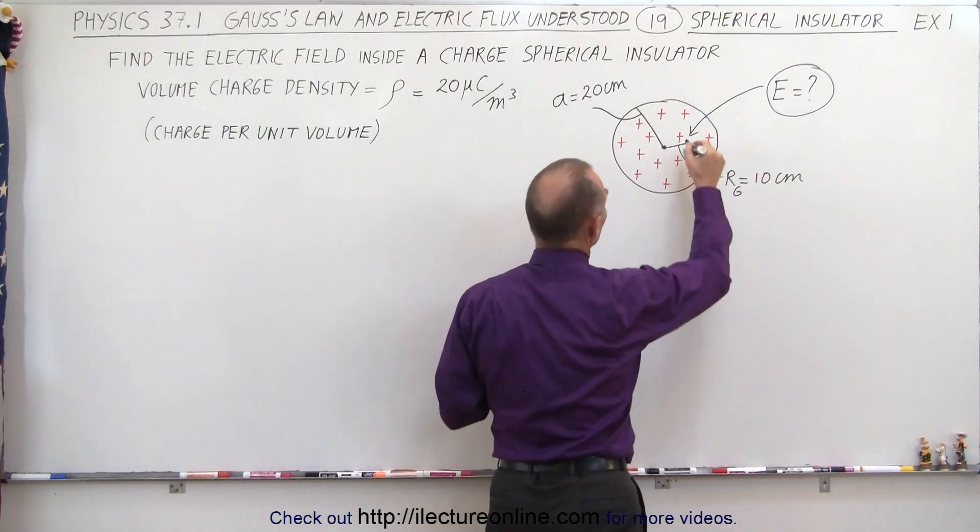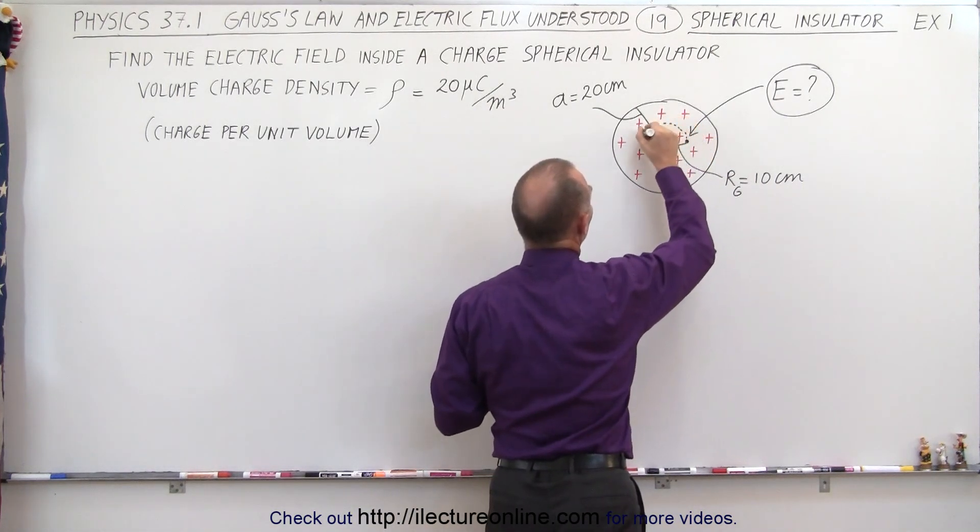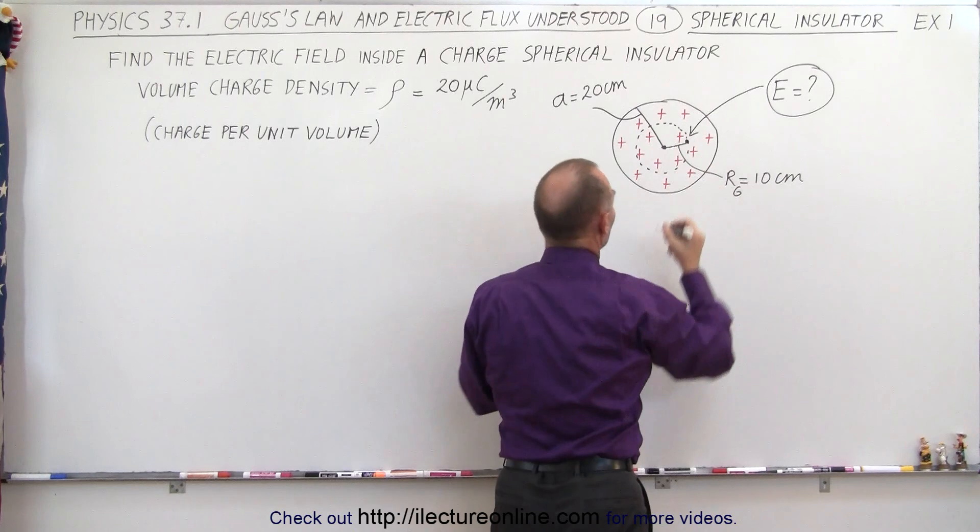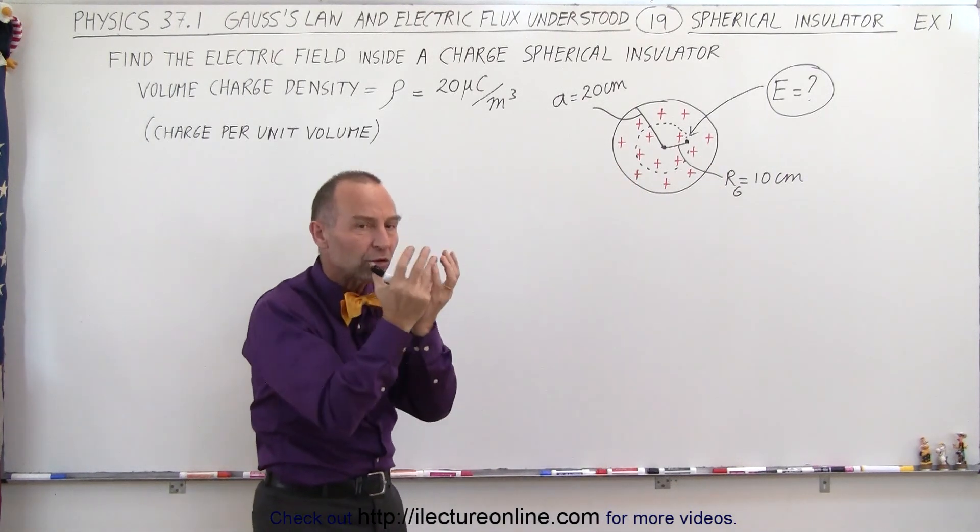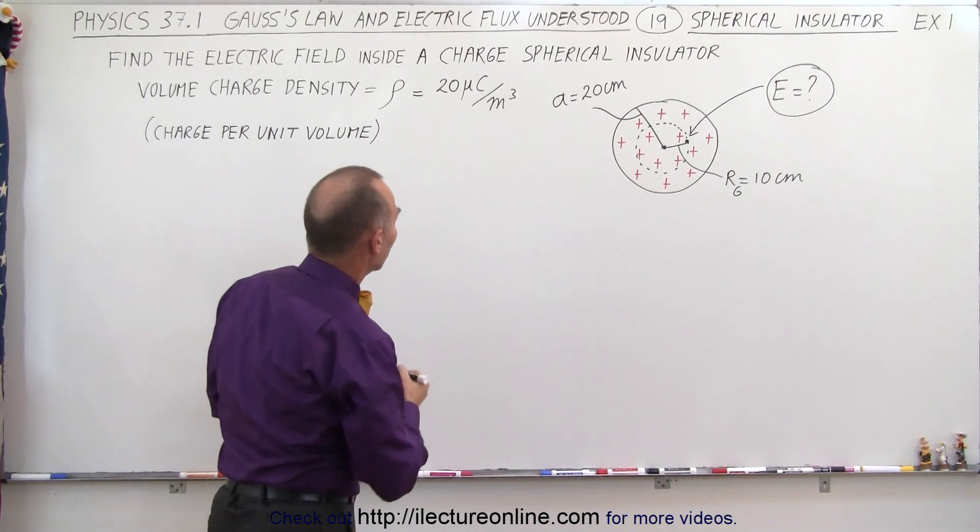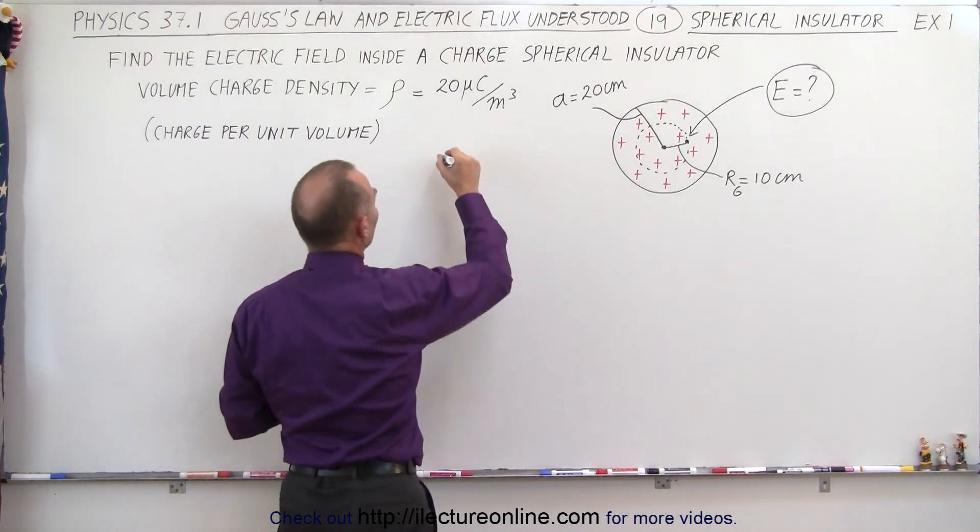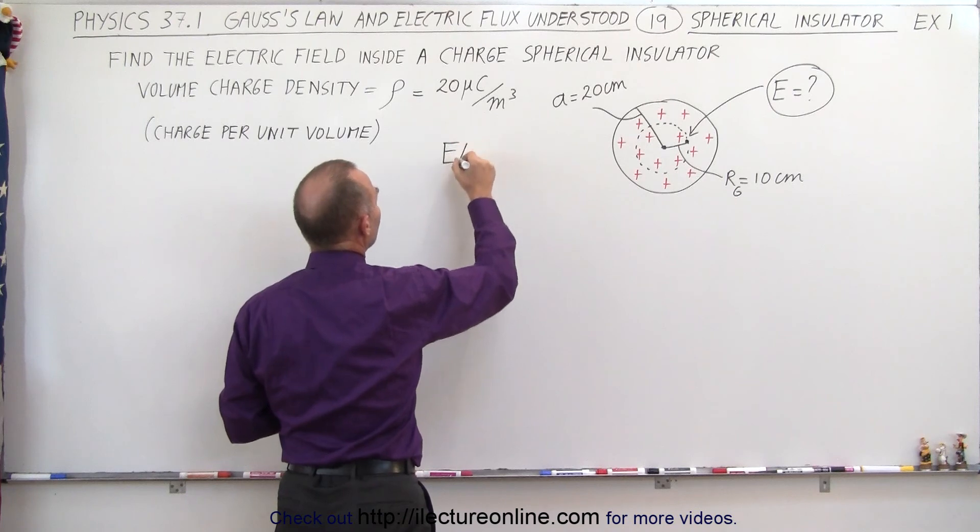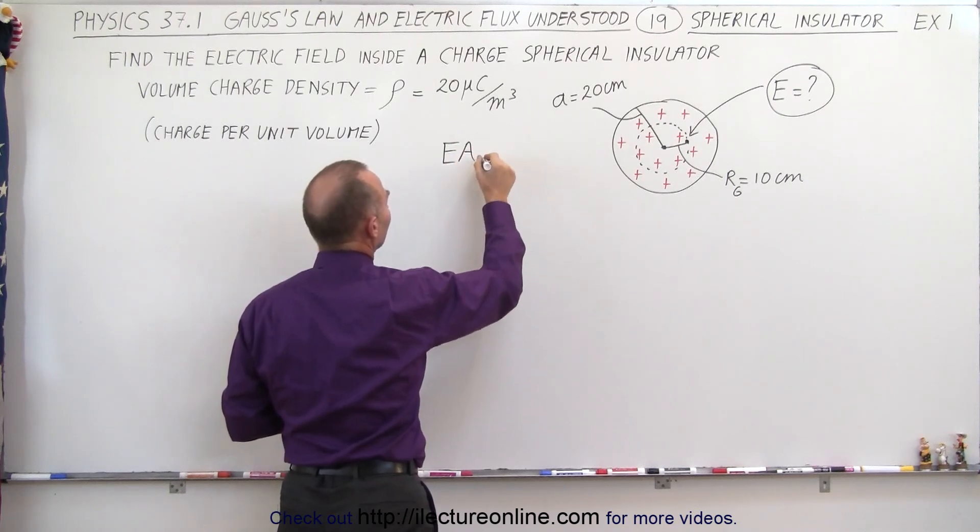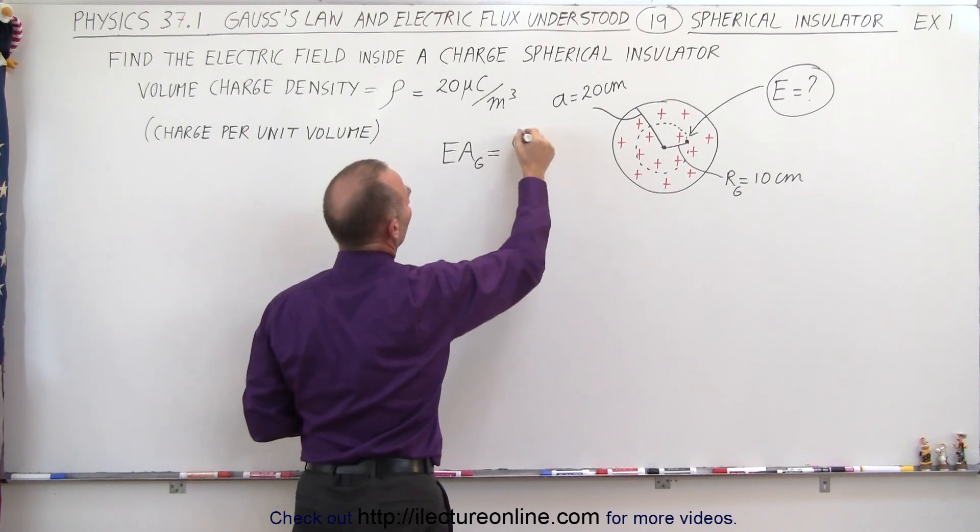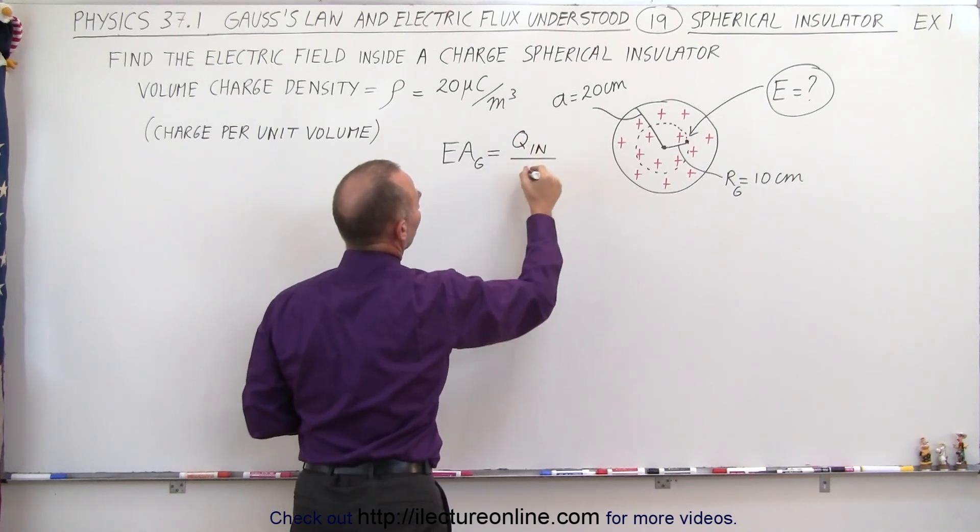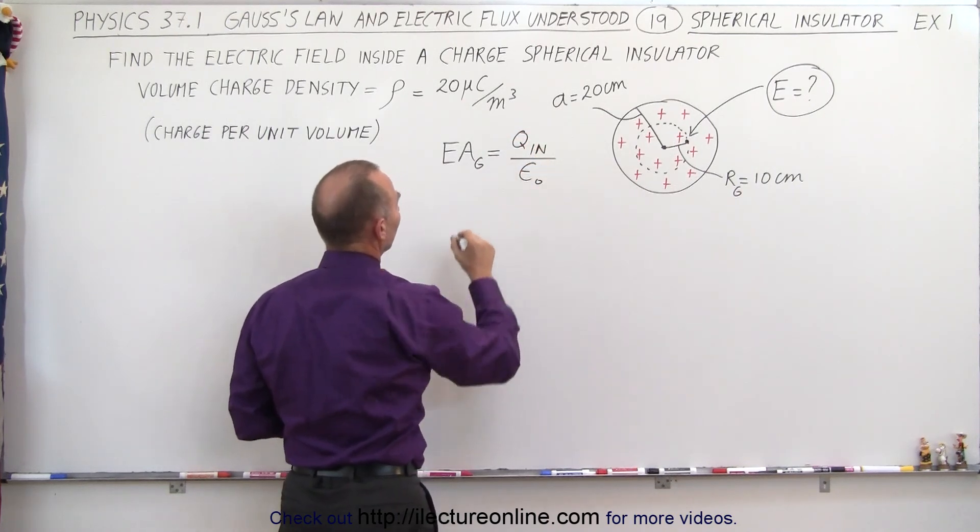What you're going to do is draw a Gaussian surface. And you realize that's going to be a sphere with radius 10 centimeters engulfing just a portion of the charge on the sphere. And the equation that we're going to use is that E times A, the electric field strength times the area, the surface area of the Gaussian surface, is equal to the charge inside that Gaussian surface divided by epsilon sub naught.